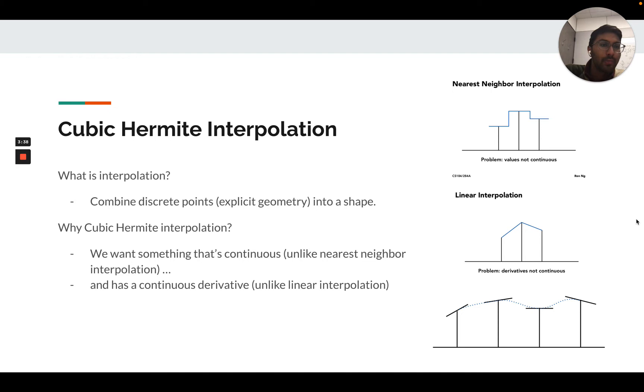Cubic Hermite interpolation is a way to interpolate discrete samples with given tangents at the samples. That is continuous, but also has continuous first derivative.